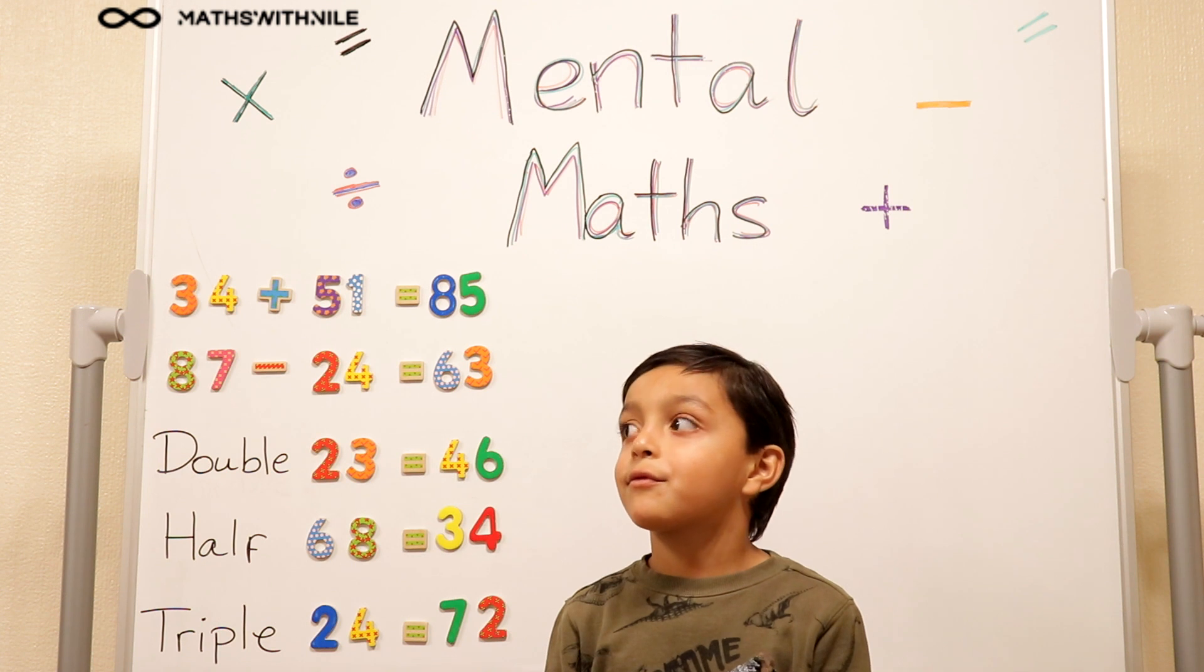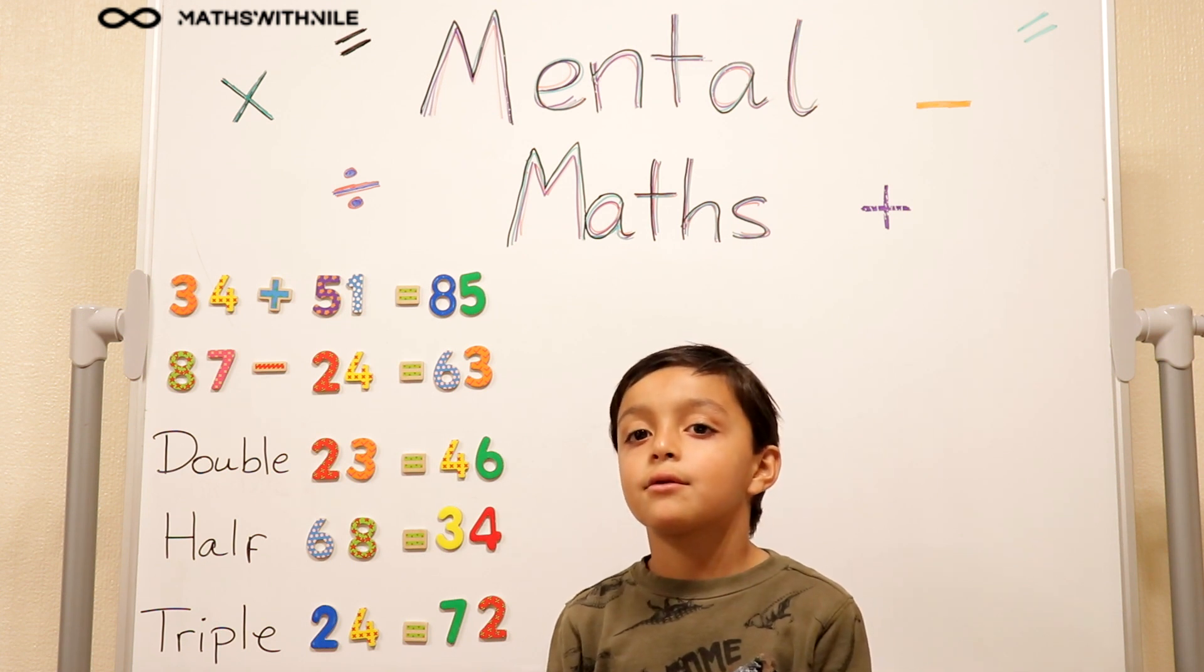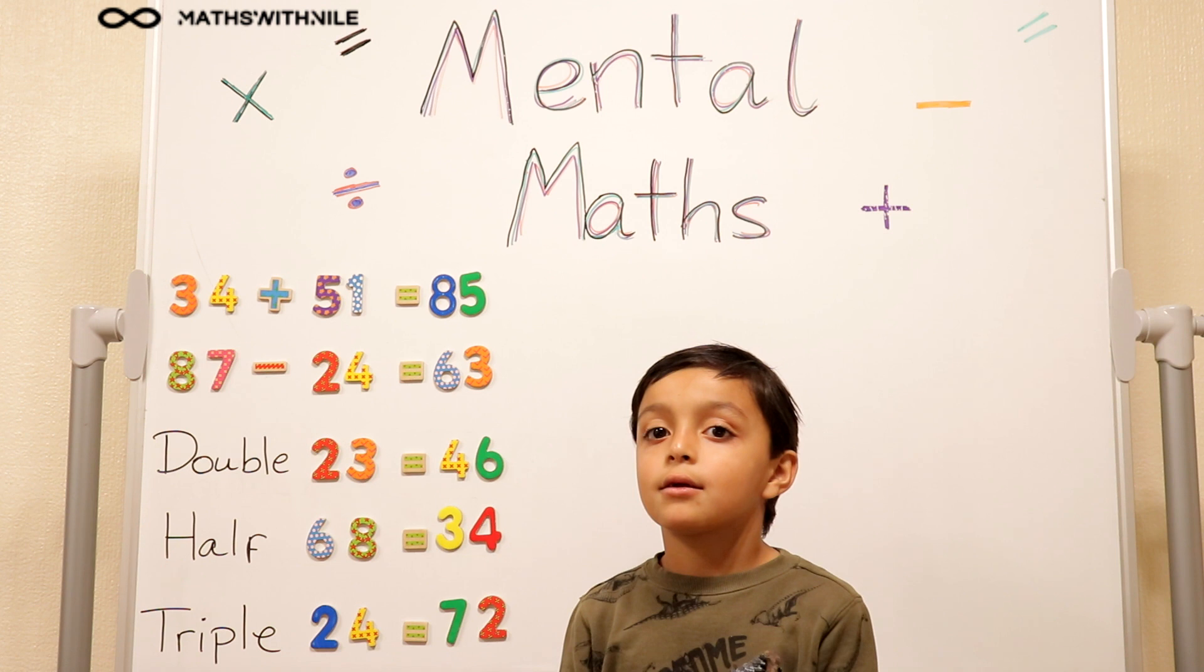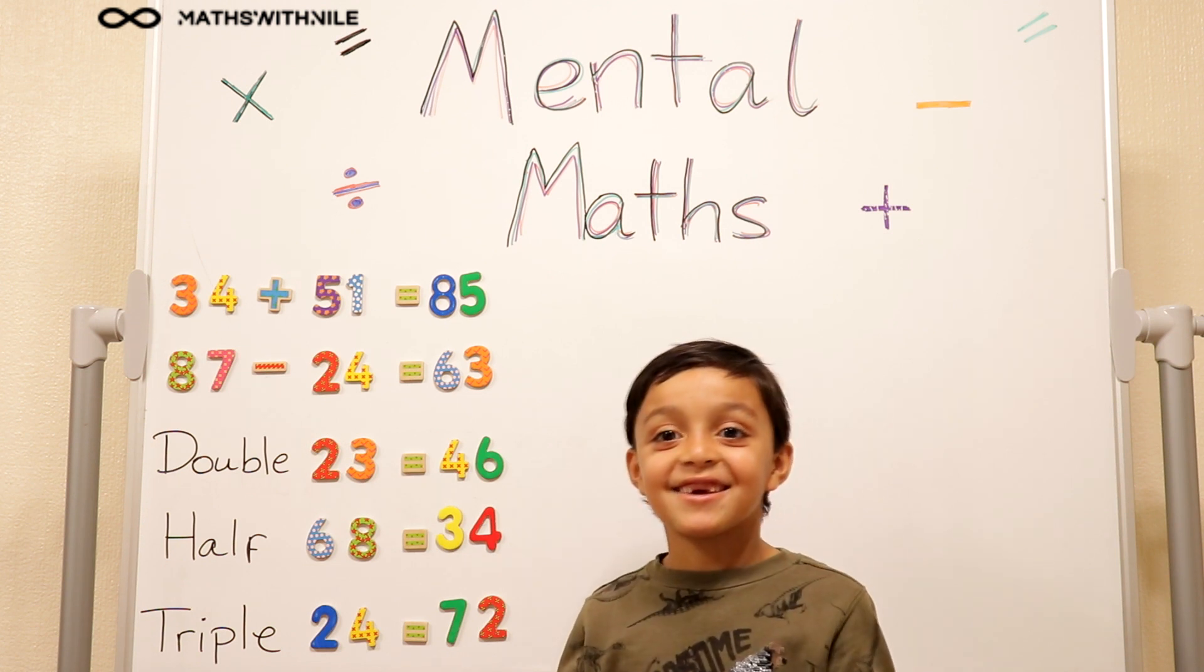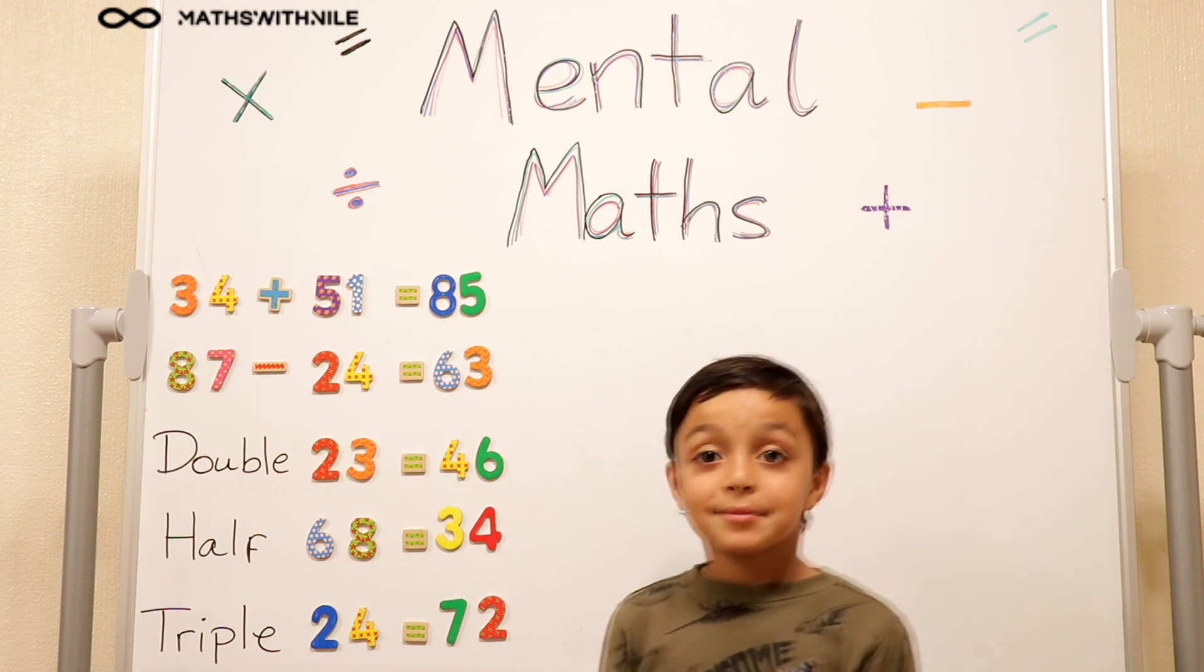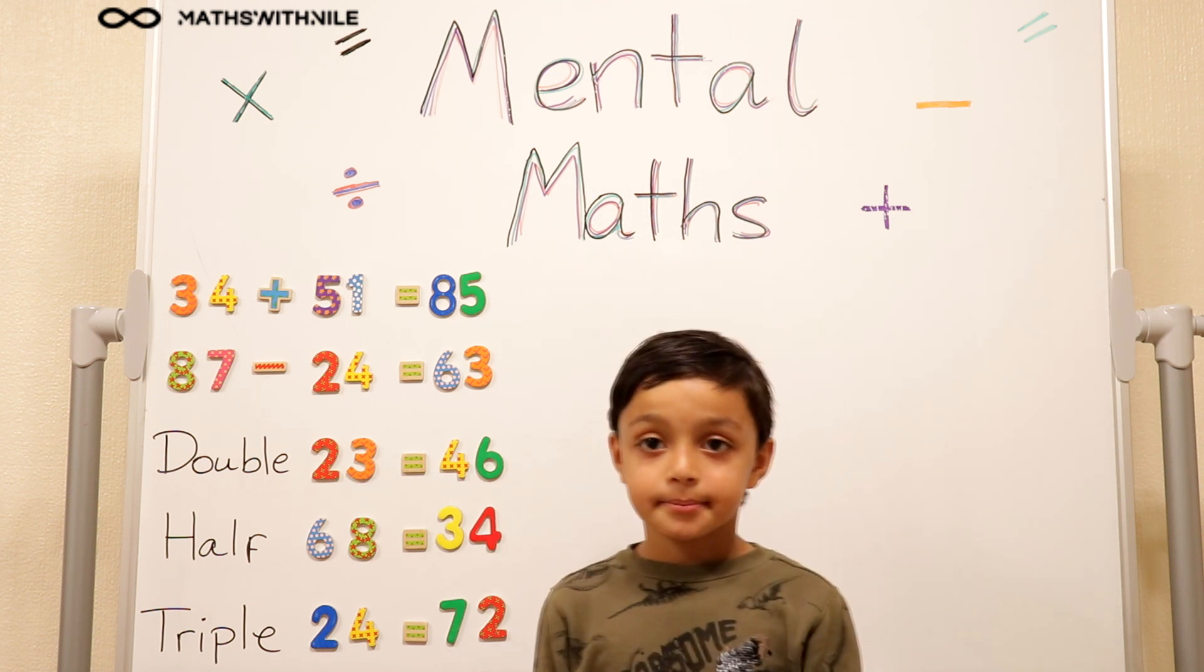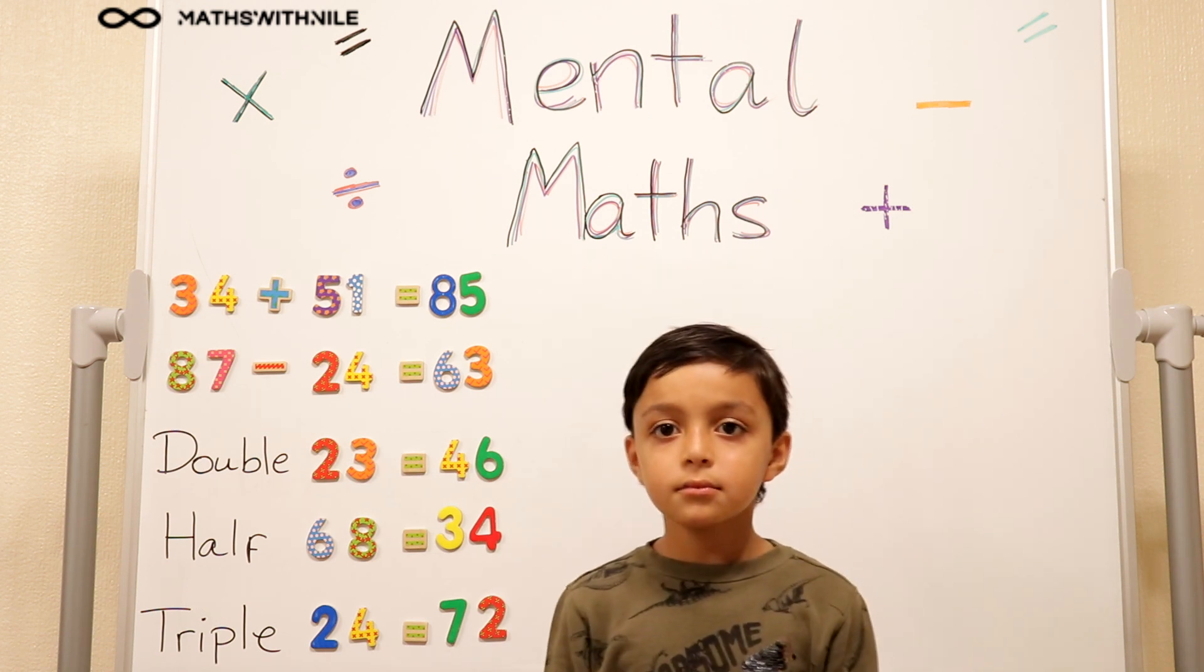So 30, no. Half of 30 is 15. Half of 4 is 2. So that means 15, 16, 17. Very good, Niall. Very good.